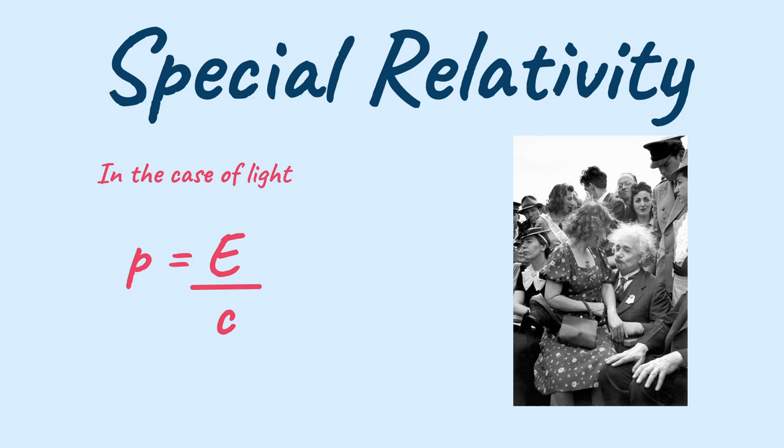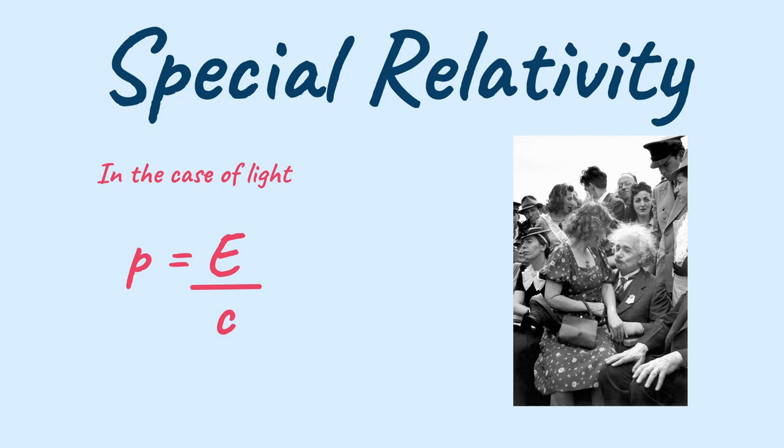So now we know why light has no mass yet it has momentum. And the special relativity formula is not only applicable on light but it's applicable on anything and everything. So there's the quote from Einstein order is for idiots genius can handle chaos. So thank you for watching enjoy learning.